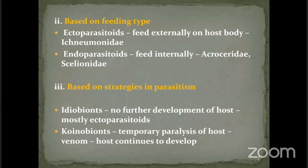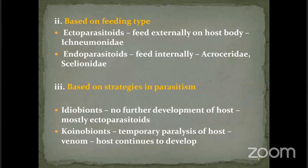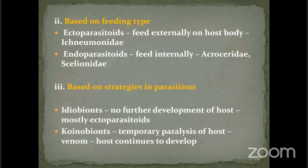In case of endoparasitoids, the parasitoid develops internally — inside the abdomen of a spider. For example, Acroceridae develops within the abdomen of an adult or juvenile spider. Scelionidae are endoparasitoids that develop in the eggs of spiders, not in adults — Scelionidae attack eggs alone. Acroceridae is known to attack adult and juvenile spiders.